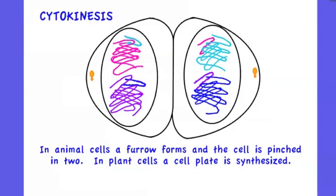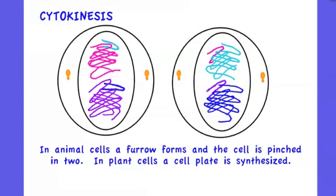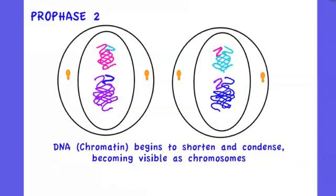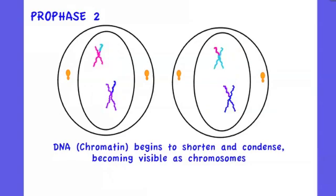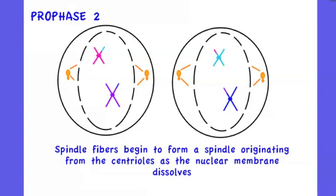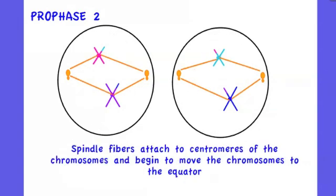After cytokinesis comes the second division, meiosis 2, which begins with prophase 2. Once again, chromosomes condense to become visible, the spindle forms, and the nuclear envelope disintegrates.